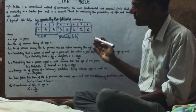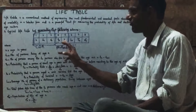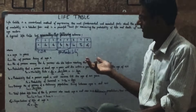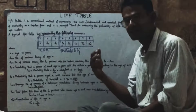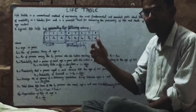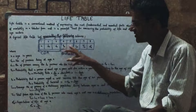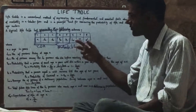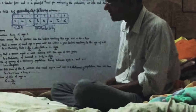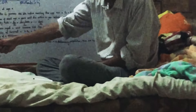We can remember the five columns easily: the first three columns relate to true death rates, and the next two columns are probabilities. Since probability covers success and failure, P plus Q equals 1. The sixth column is LX.